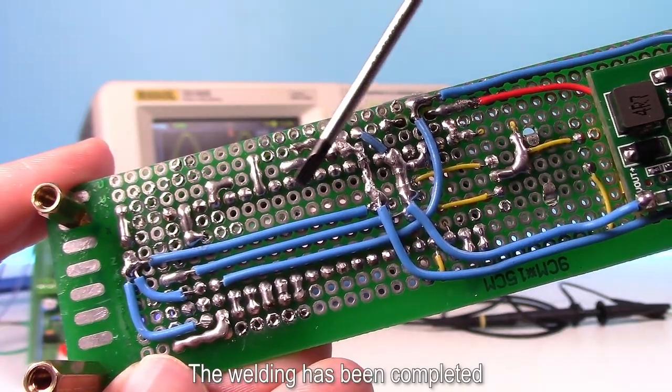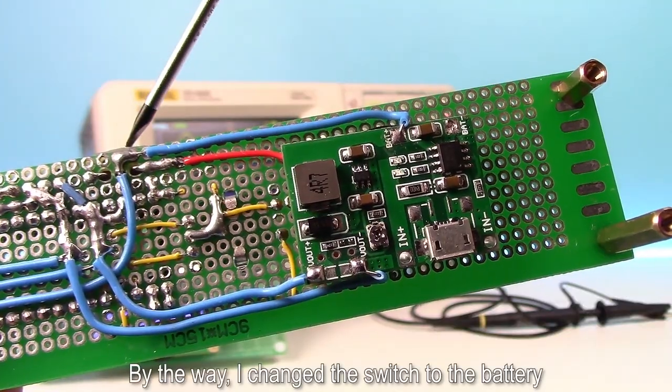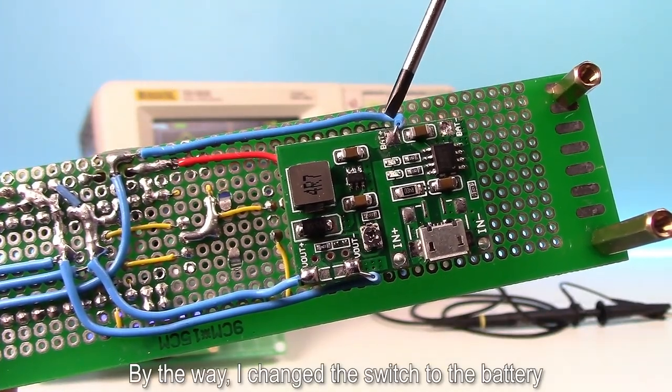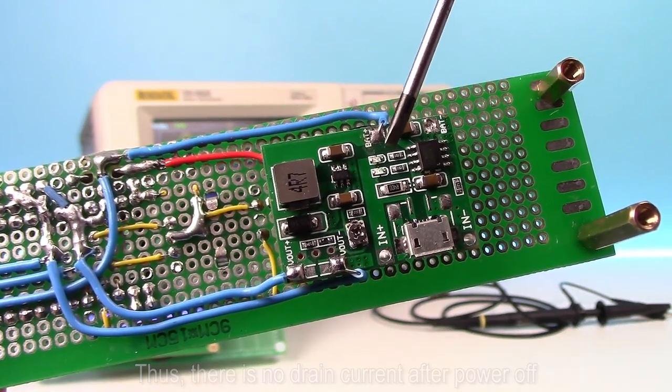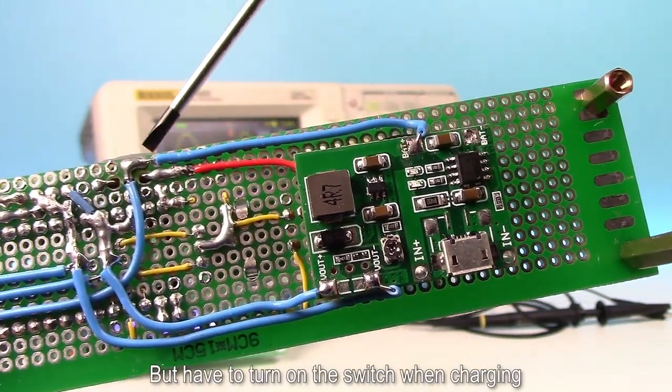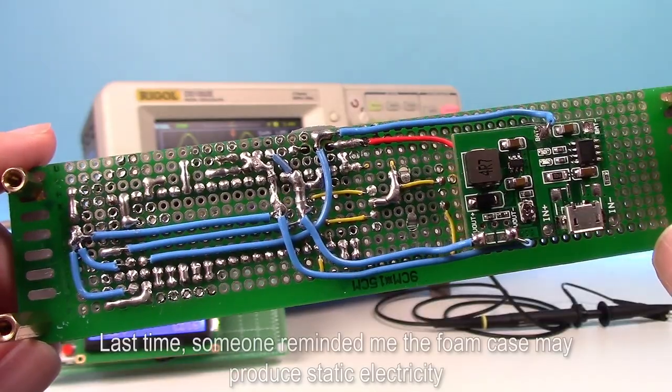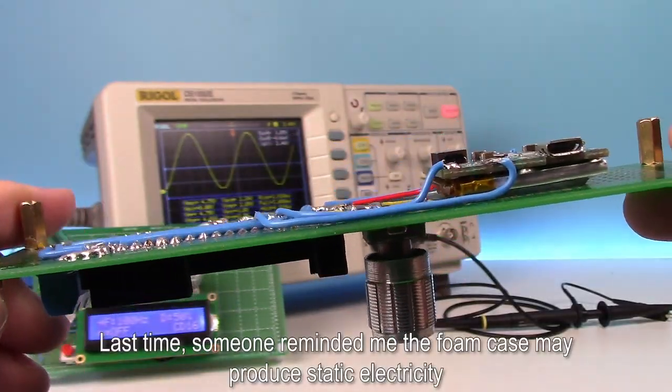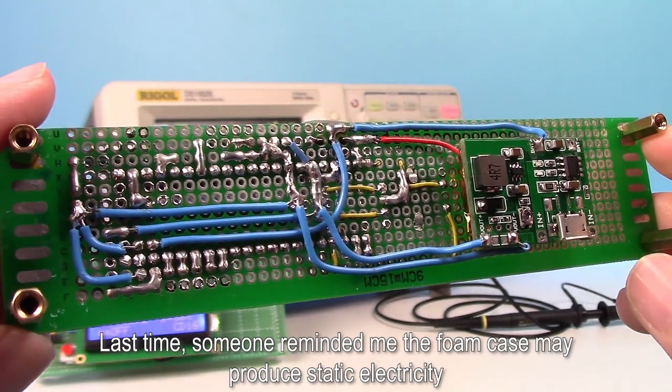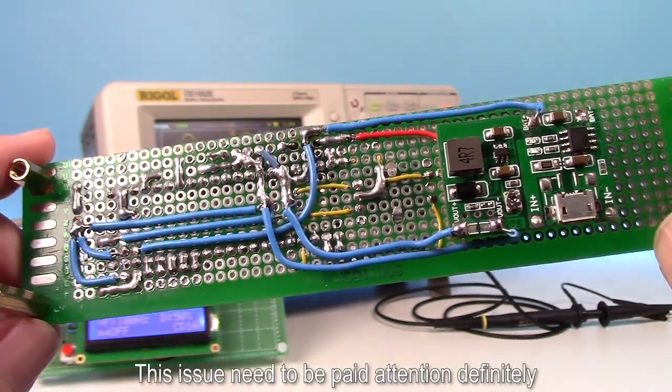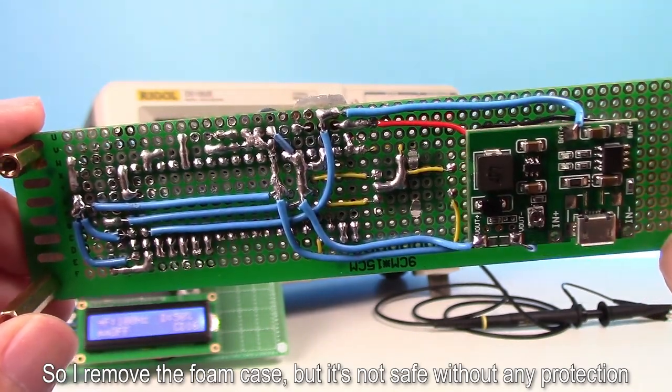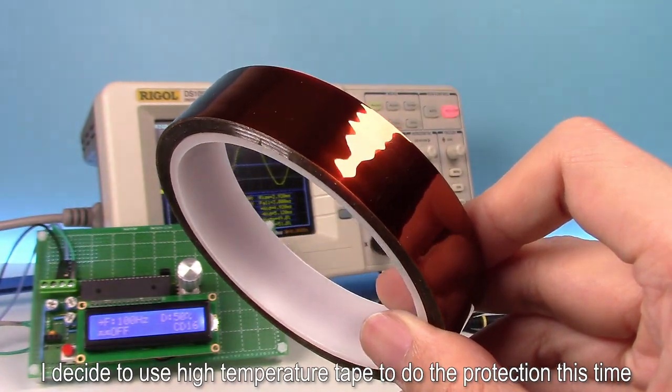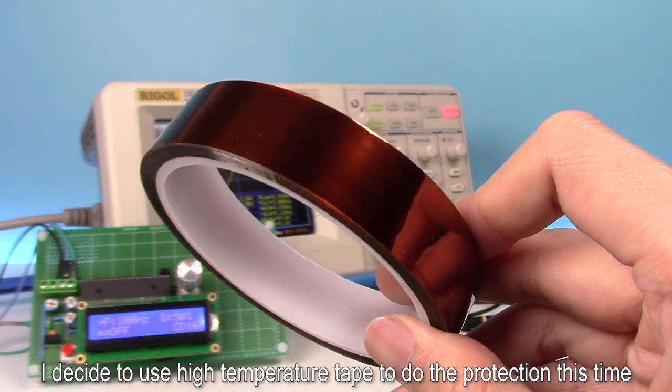The welding has been completed. By the way, I changed the switch to the battery. Thus, there is no drain current after power off, but have to turn on the switch when charging. Last time, someone reminded me the foam case may produce static electricity. This issue needs to be paid attention definitely. So I removed the foam case, but it is not safe without any protection. I decided to use a high temperature tape to do the protection this time.